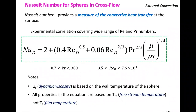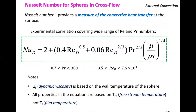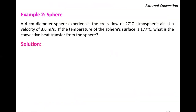Open your book to table 6.6 — the equation for a sphere in gas or liquid. Remember: μ_S is read at the wall temperature and the rest of the properties are based on the free stream temperature rather than the film temperature. The film temperature is the average of the wall plus free stream divided by 2. We have a 4-centimeter diameter sphere experiencing cross flow of 27°C atmospheric air at 3.6 meters per second. The sphere's surface temperature is 177°C. What is the convective heat transfer from the sphere?